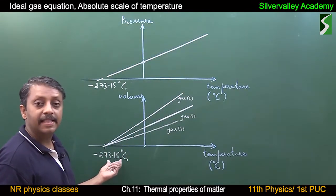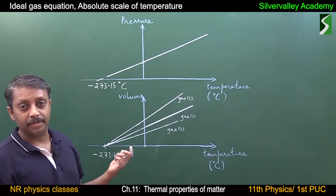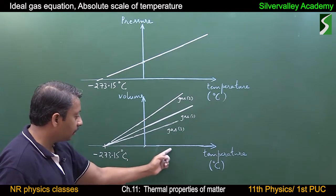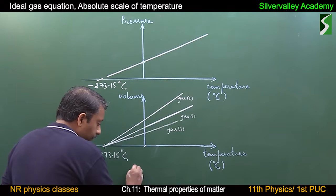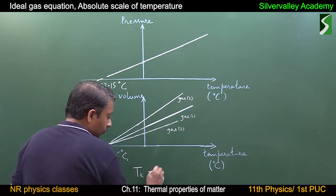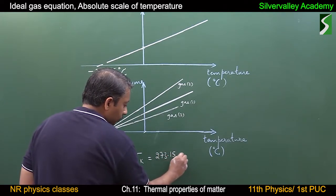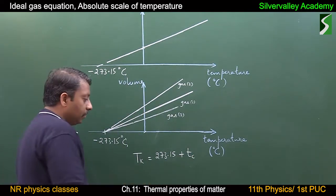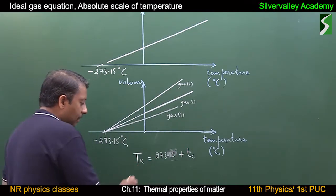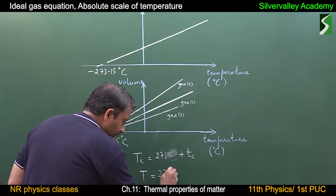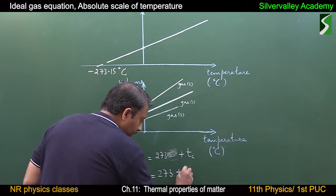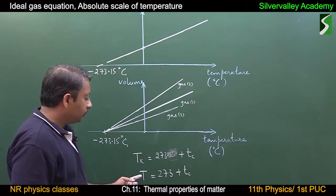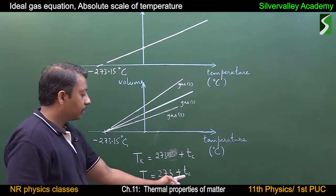This temperature is taken as the reference in the absolute scale of temperature, also called the Kelvin scale of temperature. Temperature in the Kelvin scale equals 273.15 plus temperature in the Celsius scale. Usually, small letter is used for Celsius and capital T is used for Kelvin. So, T equals 273 plus Tc.